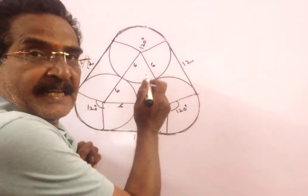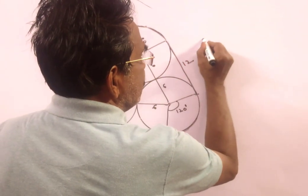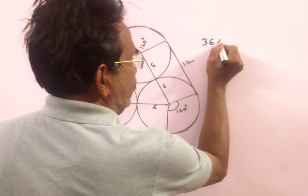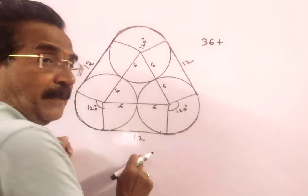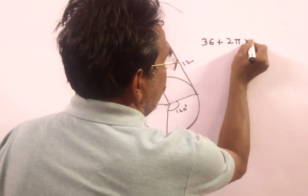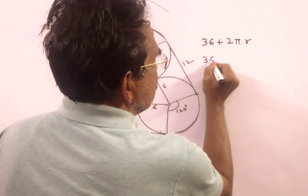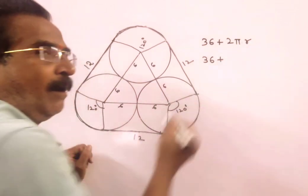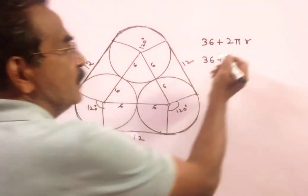So now the total length of the string is the straight line length is 36. This straight line length is 12 plus 12 plus 12, 36 plus 2 pi r. 36 plus 2 into r, 6 cm.